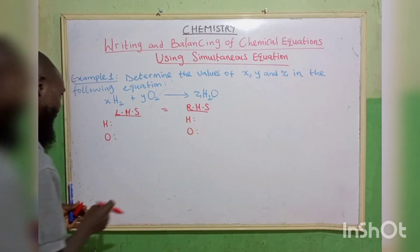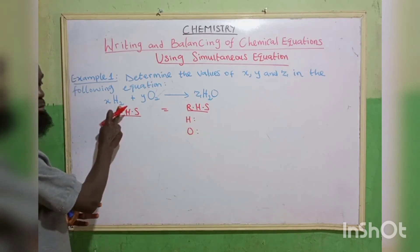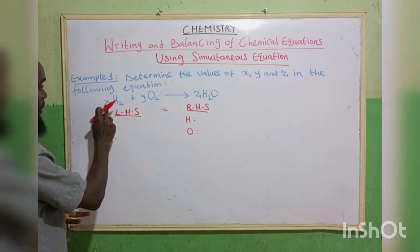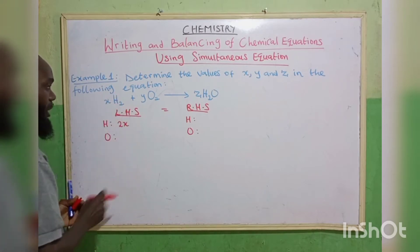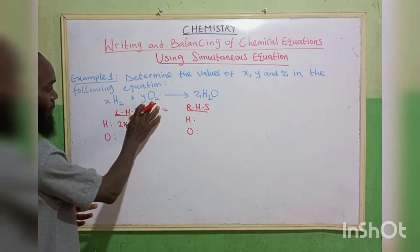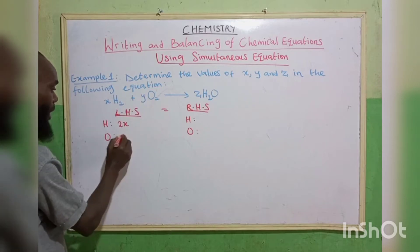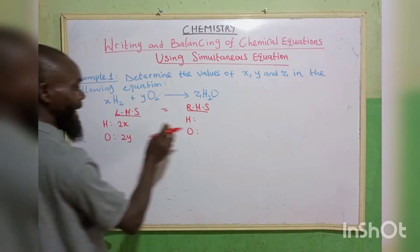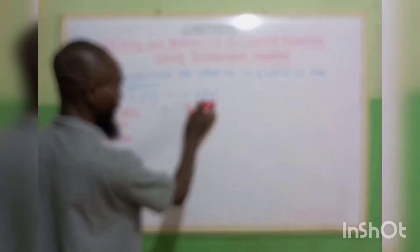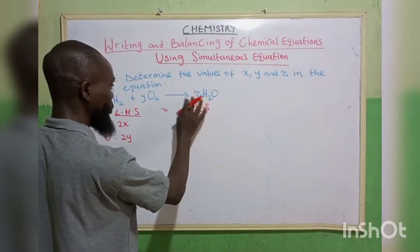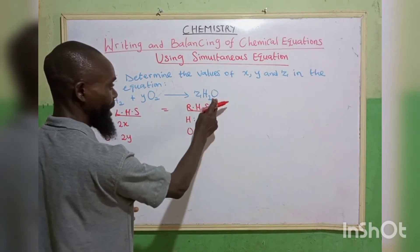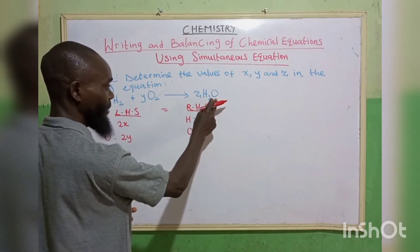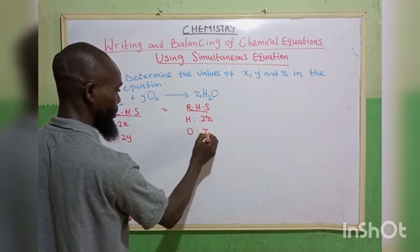How many hydrogen do we have here? We have 2. 2 multiplied by X gives 2X. How many oxygen do we have here? We have 2. 2 multiplied by Y gives 2Y. Then how many hydrogen here? We have 2. 2 times Z gives 2Z. How many oxygen? We have 1. 1 times Z gives Z.